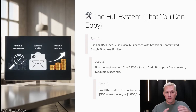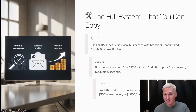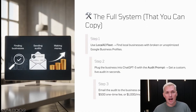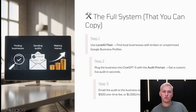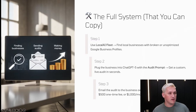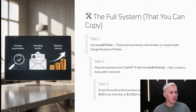So to recap: step one, find optimization leads using that tool linked in the description. Step two, run the business through ChatGPT5 with the audit prompt from the Google Doc. Step three, email that audit — done in literally three seconds — to the business owner and offer to fix the issues for either a $500 one-time fee to fix those three issues, or upgrade them to a recurring monthly fee of $1,000 to run audits once a month and fix anything new.